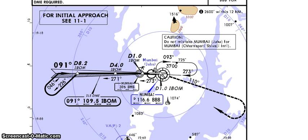Once cleared for the approach, we'll proceed on a track of 273 and backtrack on the localizer on 271, descending to 2600 feet. At 8.2 ILS DME, we'll commence a procedure turn to the left and intercept the final approach track 091. Final approach fix is at 8.2 DME.